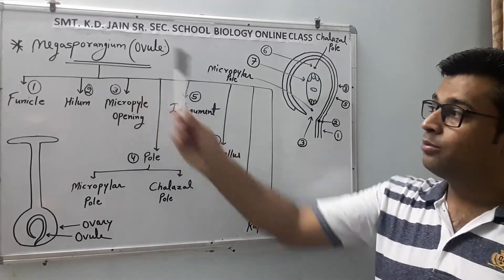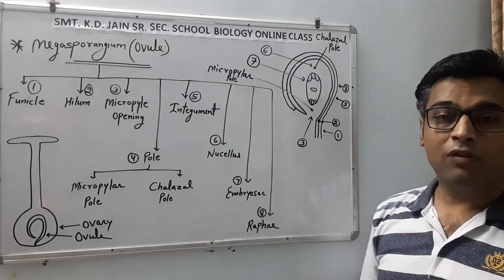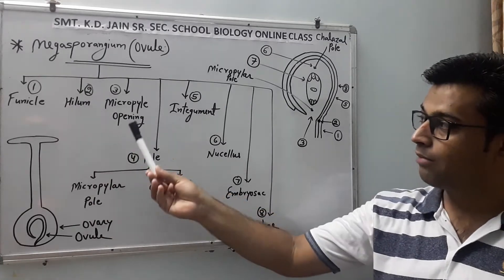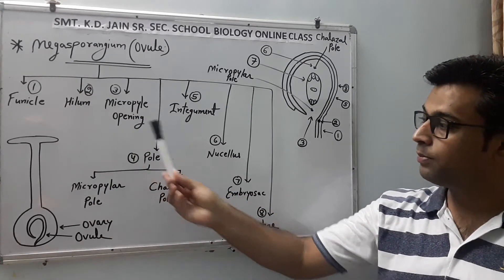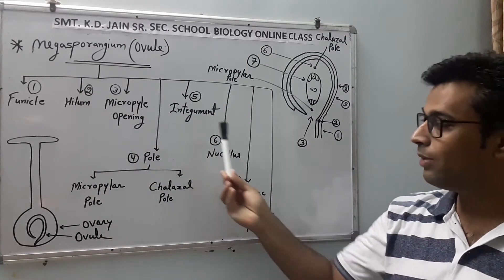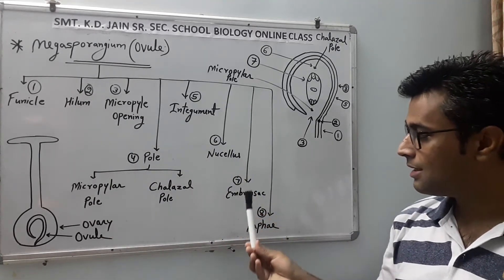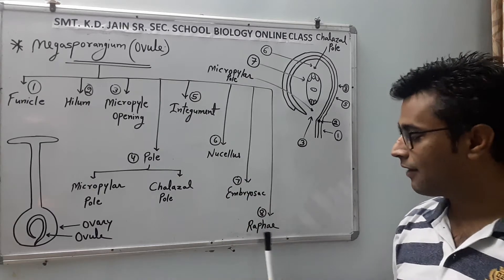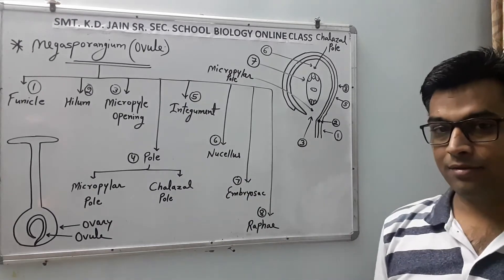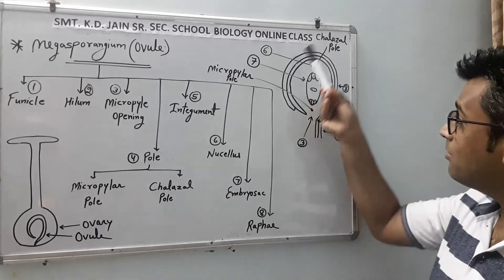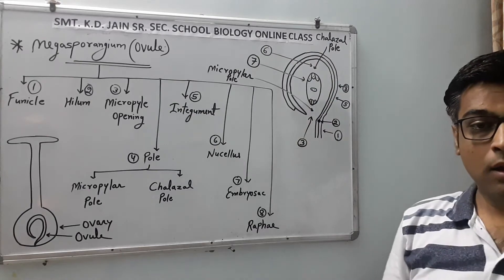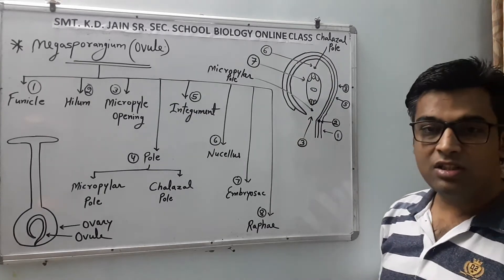Megasporangium has the following parts: Funicle, Hilum, Micropylar opening, Pole, Integument, Nucellus, Embryo sac, and Raphe — total 8 parts. This diagram shows them numbered. Now let's study each one by one.